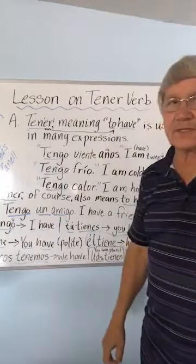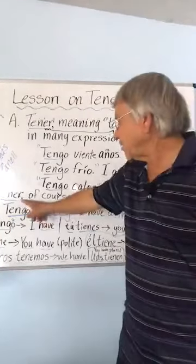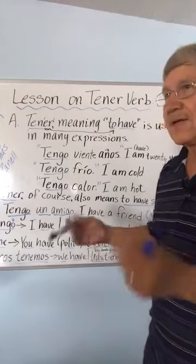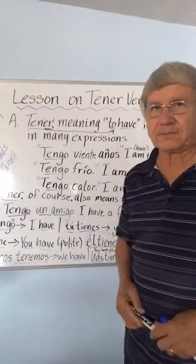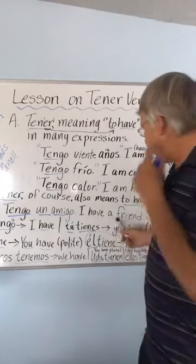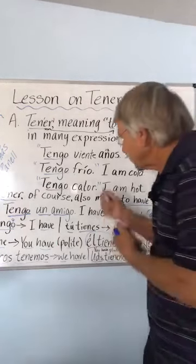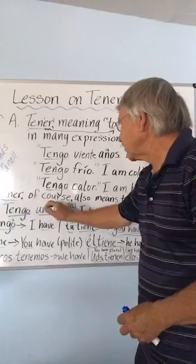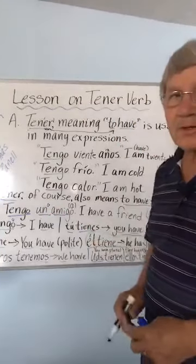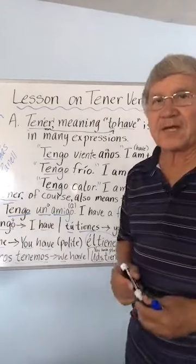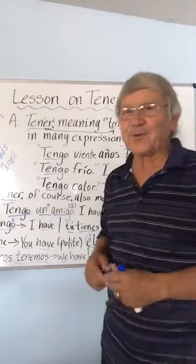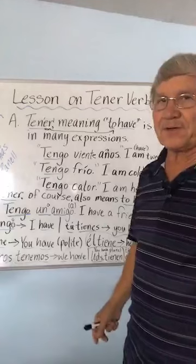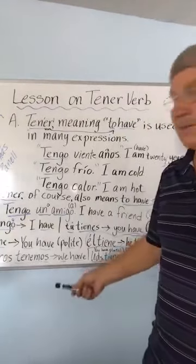Tener can also mean like 'I have something.' Tengo un amigo — I have a friend. Or if it's a girl, tengo una amiga — it would be una with an 'a' for a girl. You have at least one friend, right? Amigo means friend — you've probably heard that term if you've been around Spanish at all.